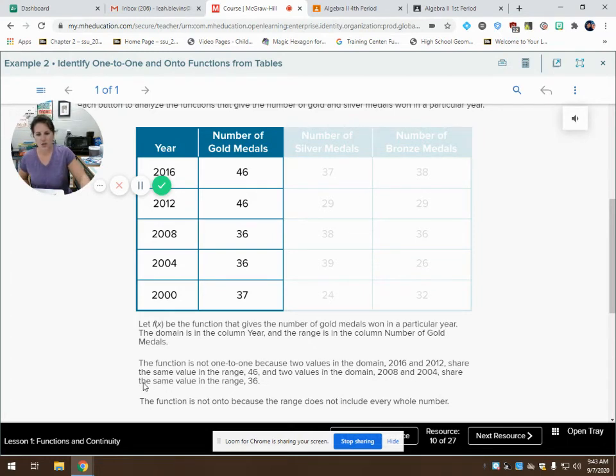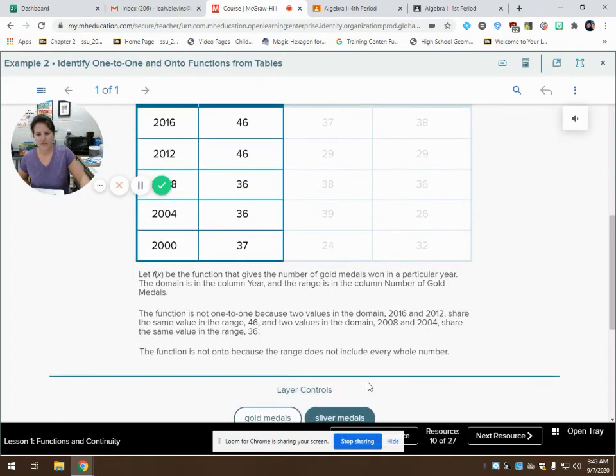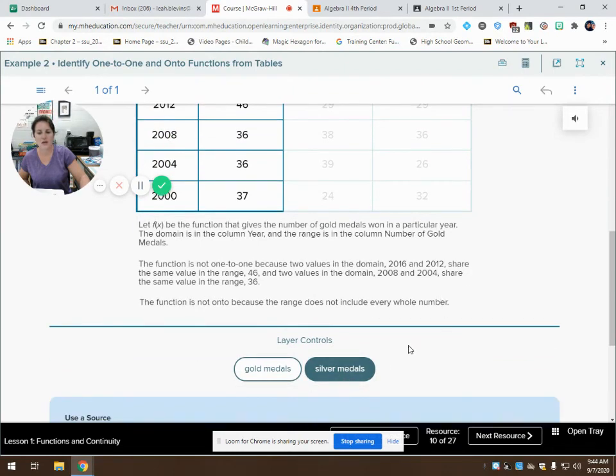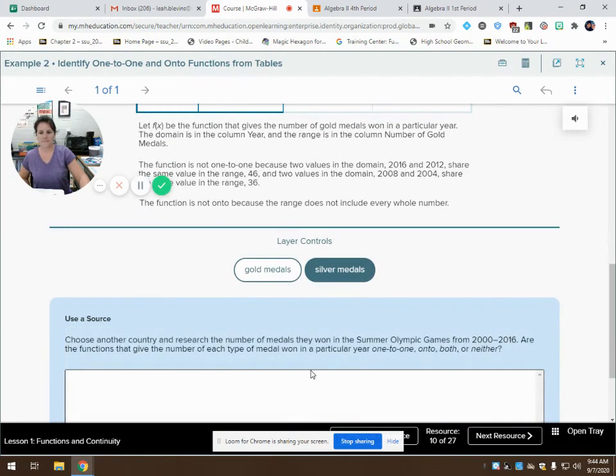So then it says, determine if the function is onto. Well, the function is not onto because the range does not include every whole number, or every real number. It says that a function is onto if every possible outcome is included. We don't have every possible outcome included.